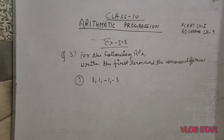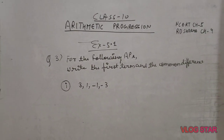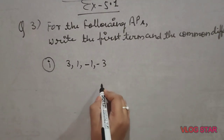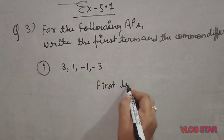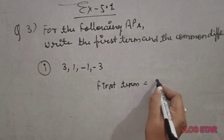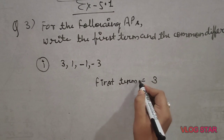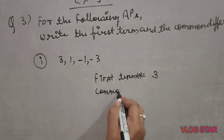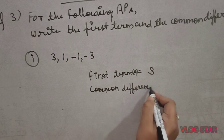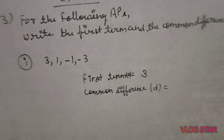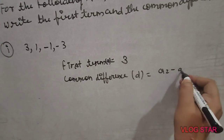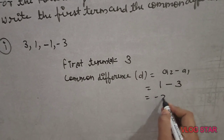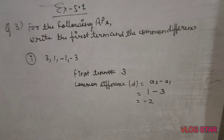The remaining parts of question 2 you can do yourself. For question number 3 from NCERT Exercise 5.1: write the first term and the common difference for the given AP. The first term a is given directly. For common difference D, we use the formula A2 − A1 (second term minus first term). Here second term is 1 and first term is 3, so common difference D = 1 − 3 = −2. The remaining parts are for you to do.